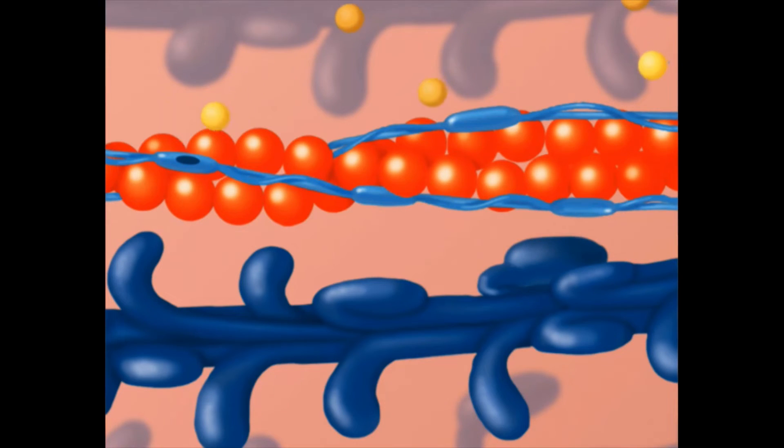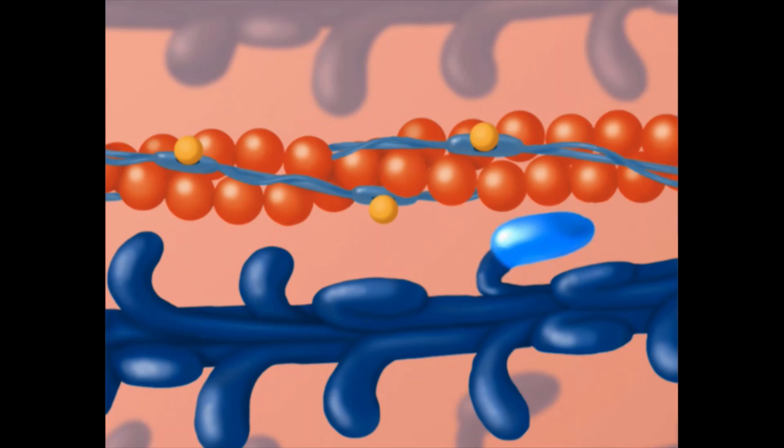Once calcium ions are released from the sarcoplasmic reticulum, they bind to the troponin on the actin molecules. Troponin, with its strong affinity for calcium ions, is believed to then initiate the contraction process by moving the tropomyosin molecules off the myosin binding sites on the actin molecules, allowing myosin heads to attach to the actin filaments.